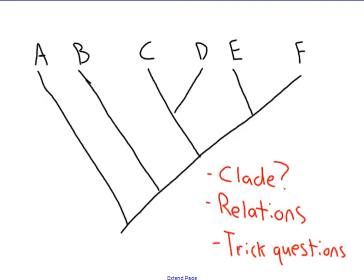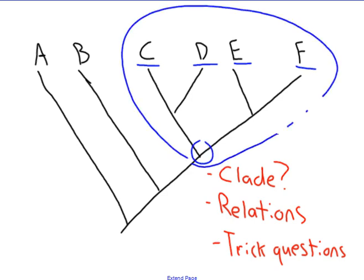Closing thoughts on this would be, number one, what is a clade? So if I ask you, what is the clade for C, D, E, and F, species C, D, E, and F, what is the clade? You should be able to draw a circle or point to the common ancestor where the clade begins. C, D, E, and F, where's the clade? The clade is right here. So all of these organisms are in a clade.